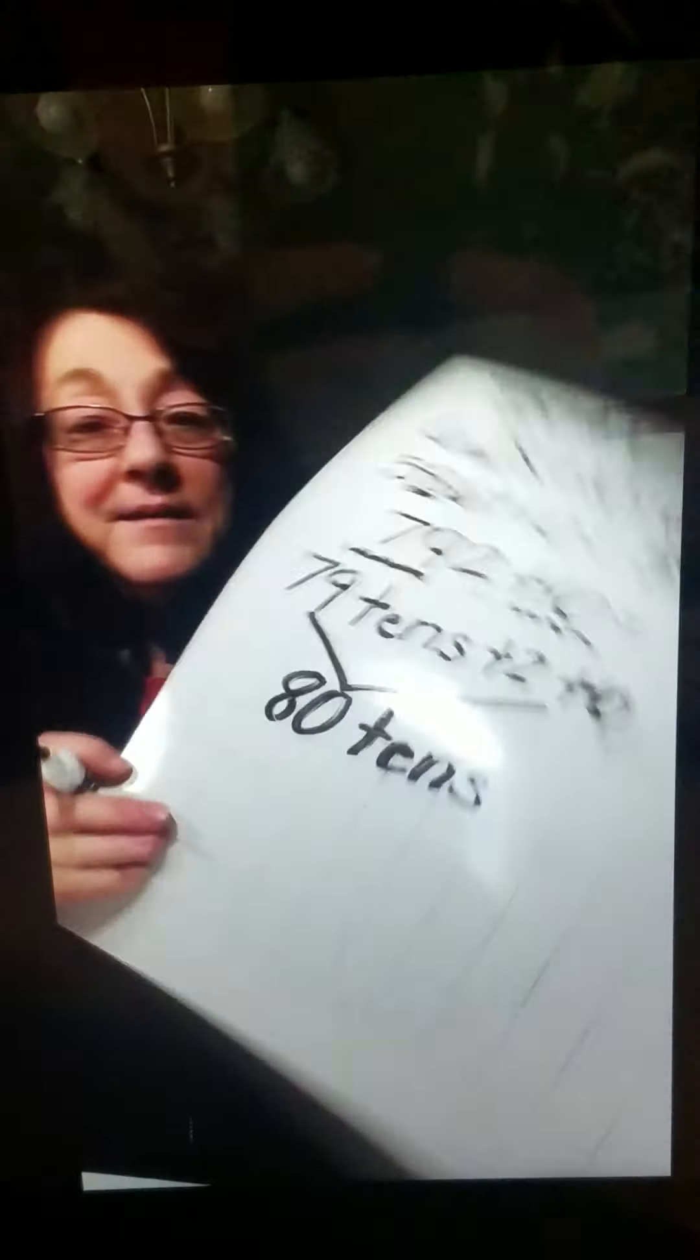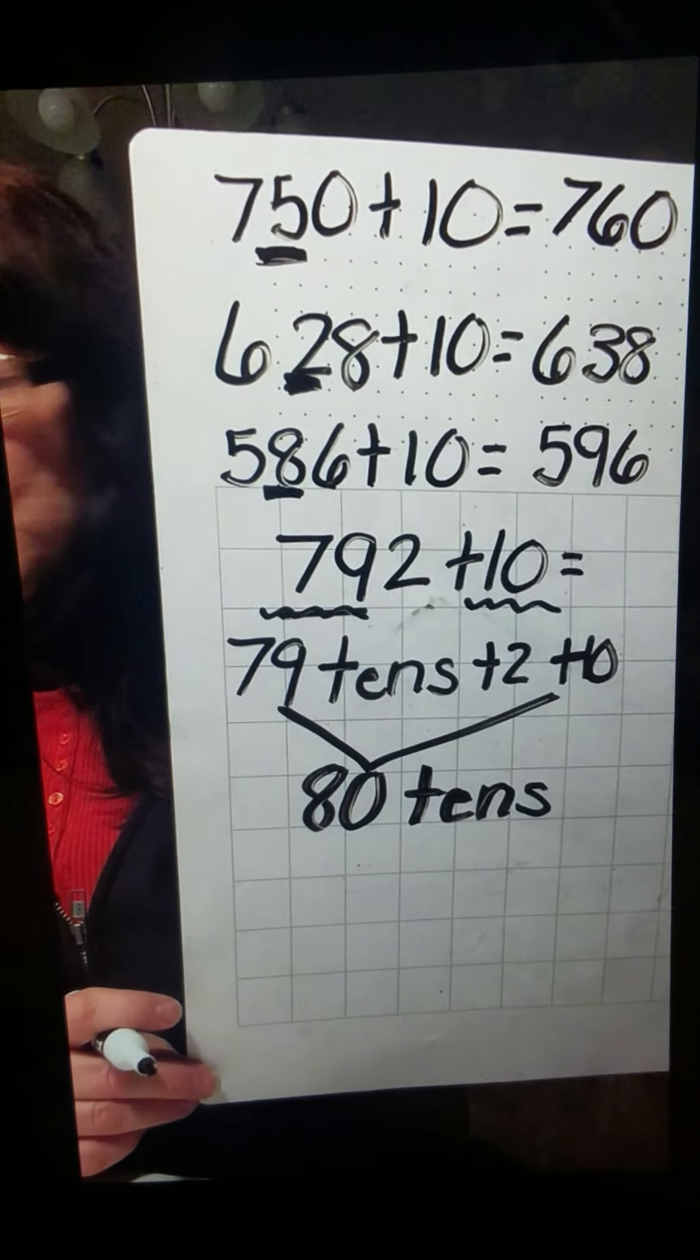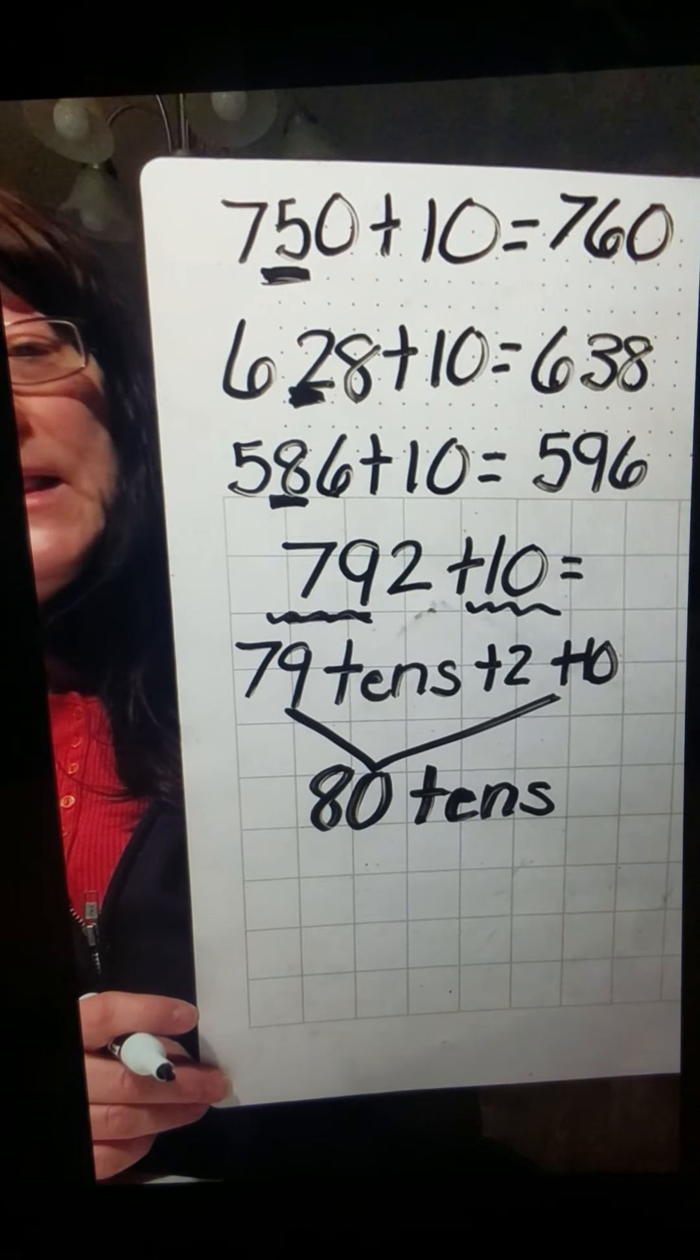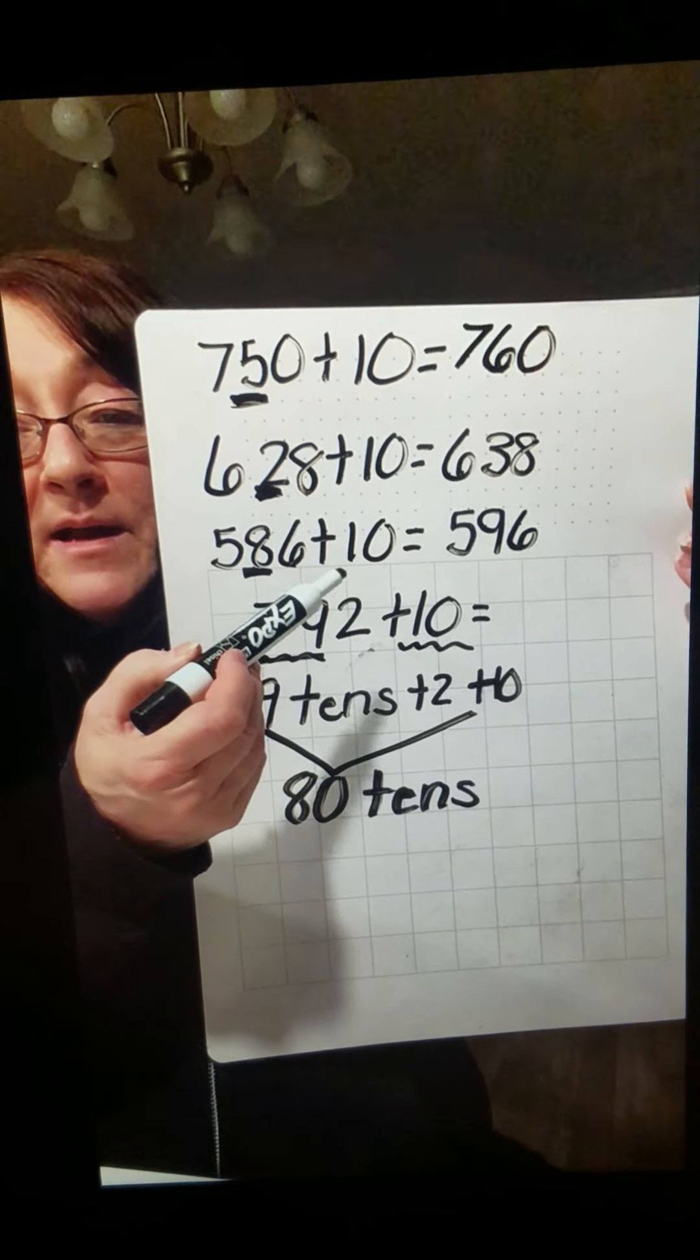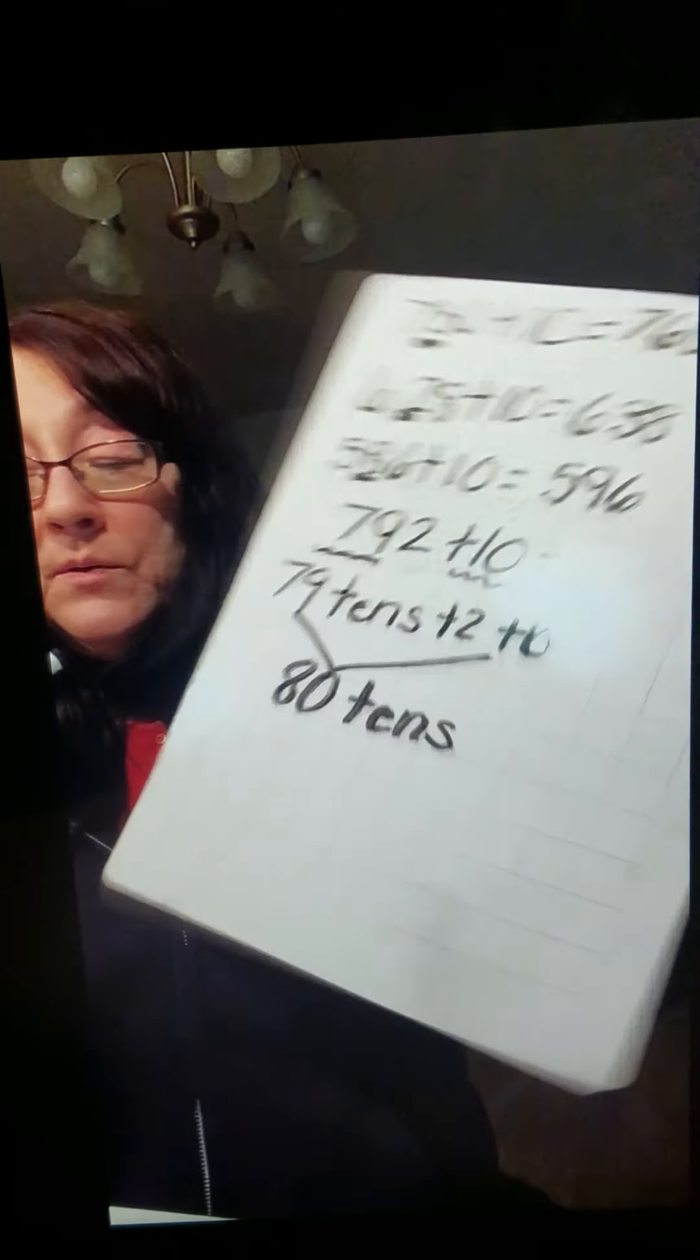Now I have 80 groups of 10. Look at that. Now I have 80 groups of 10. Plus, don't forget about our little friend here, that little 2. So I have 80 groups of 10 plus the 2 ones that we have not used yet.